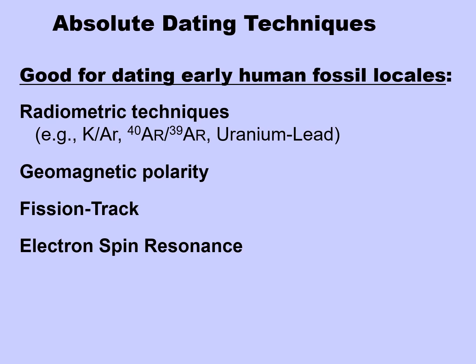The absolute dating techniques good for dating early human fossil locales include three radiometric techniques — potassium-argon, argon-argon, and uranium-lead — as well as geomagnetic polarity, fission track, and electron spin resonance.